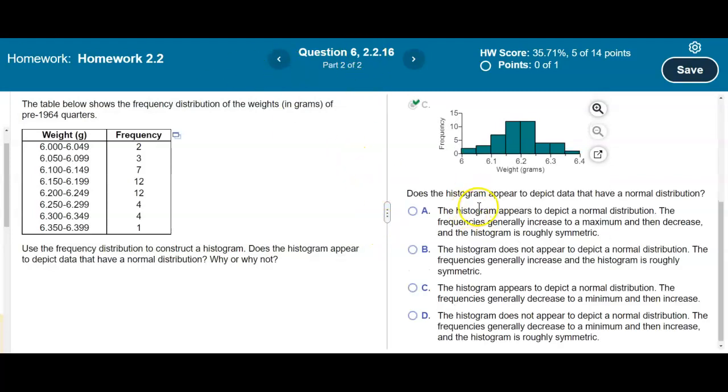The question asks if the histogram appears to depict data that have a normal distribution. Remember, for a normal distribution, the frequencies start low, then increase to the highest peak, then back down again. If we draw a bell curve around this, it looks like it could be approximately normal. The histogram appears to depict a normal distribution. The frequencies generally increase to a maximum and then decrease, and the histogram is roughly symmetric.